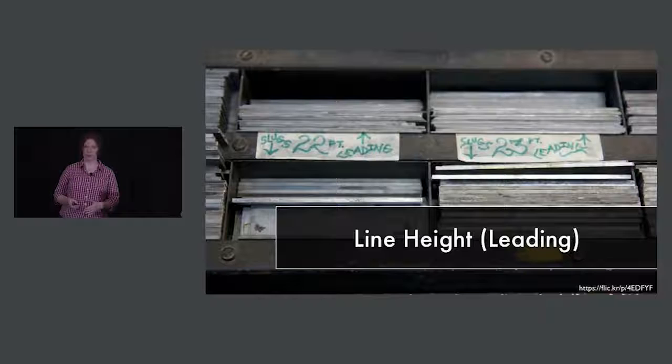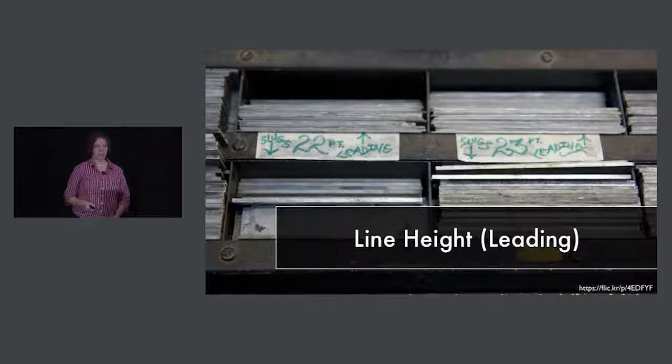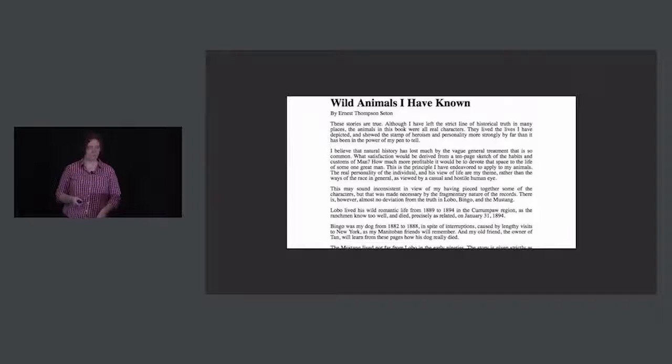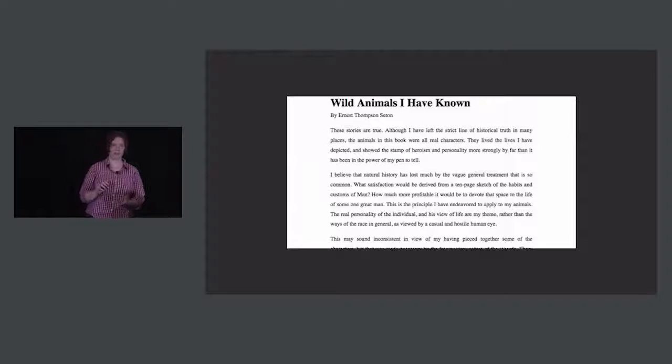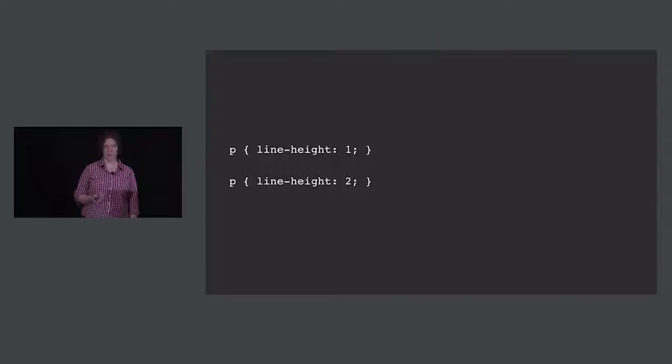Besides font size, there are two other things that affect how readable text is: line height and line width. Line height — also called leading from when metal typesetters placed bars of lead between rows — is basically how much space there is between lines. A line height of one means no extra space, and a line height of two means each line is double-spaced. The CSS is simple: just use a number like one or two. The best practice is not to use a unit at all. This is actually the only property in CSS where you can use a number without a unit and not have it be zero.